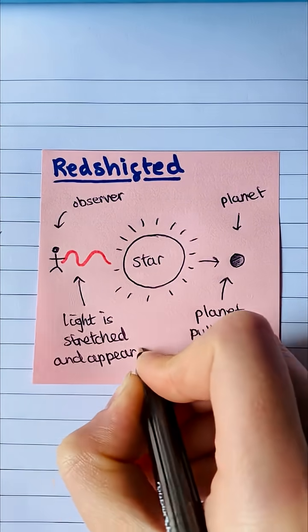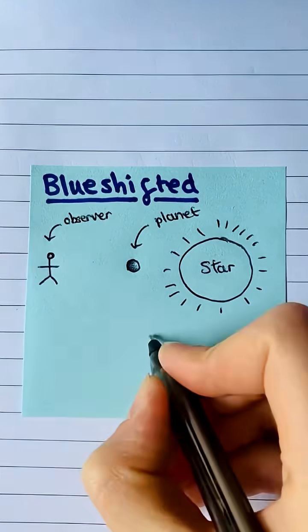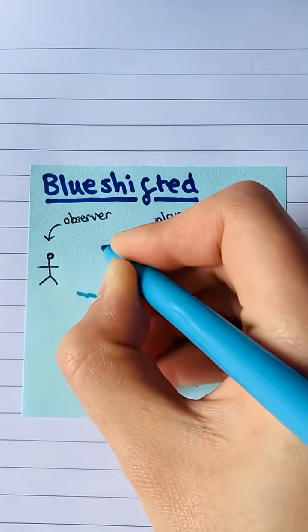Red shifted when the planet is on the far side of the star, and blue shifted when the planet is between the star and the observer.